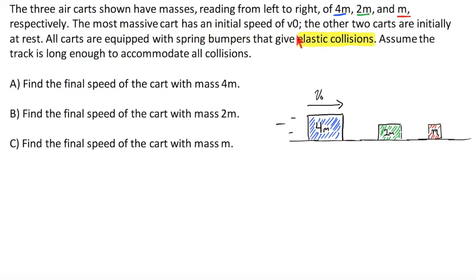The most massive cart has an initial speed of V0. The other two carts are initially at rest. All carts are equipped with spring bumpers that give elastic collisions. I highlighted that for a reason. It's going to be important. Assume the track is long enough to accommodate all collisions. So we're going to find the final speed of the cart with mass 4M.